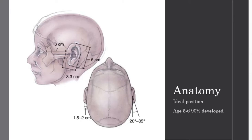When thinking about otoplasty, it's important to know the ideal positions. The ear is about 3 centimeters wide and about 6 centimeters tall. For protruding ears, the ear is about 20 to 35 degrees off the skull, measuring about 1.5 to 2 centimeters. From our microtia work, the ear is about 90% developed by the time you're 5 or 6 years old.